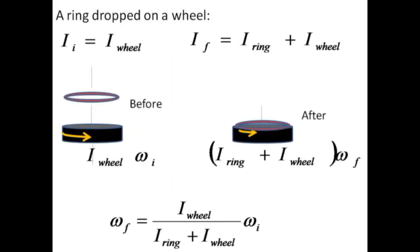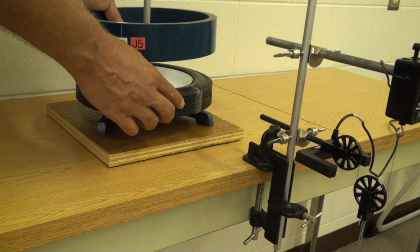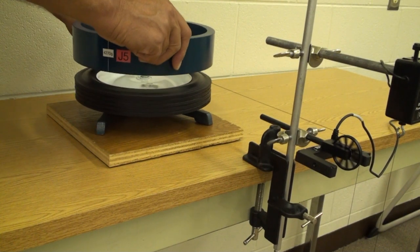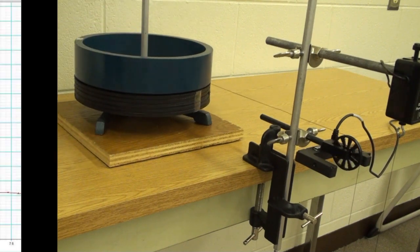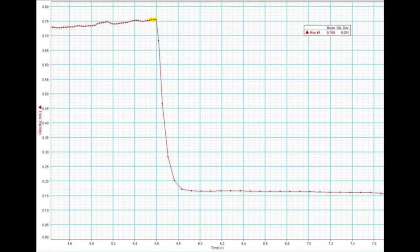We then drop a relatively massive ring onto a spinning wheel. By noting how much the final angular velocity is reduced relative to the initial angular velocity, we can determine the moment of inertia of the ring. This moment of inertia is to be compared with the predicted mass times radius squared.